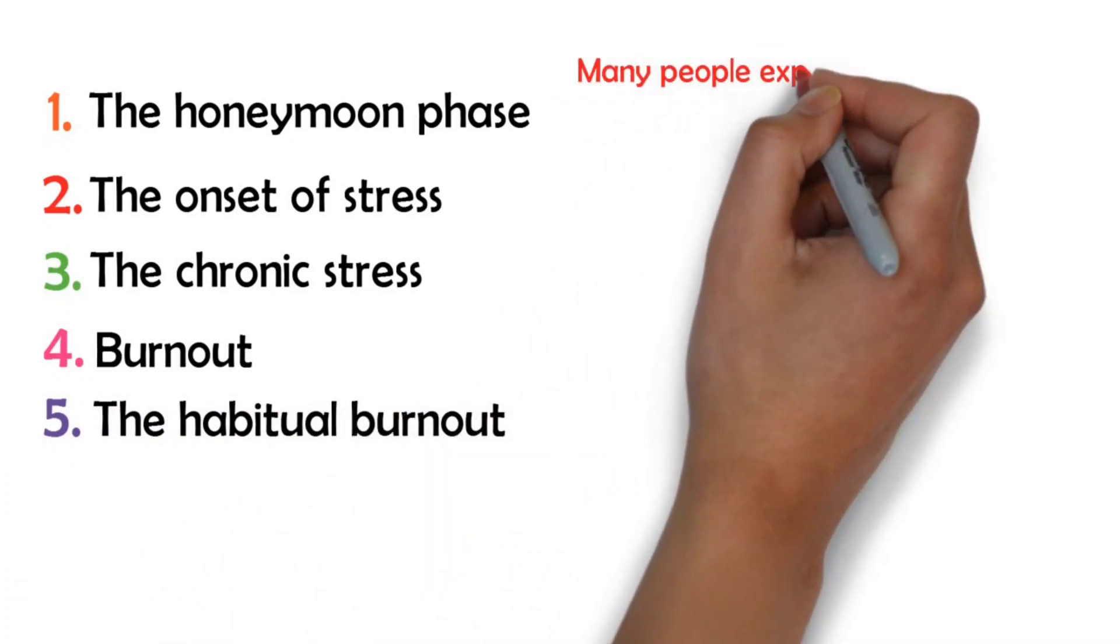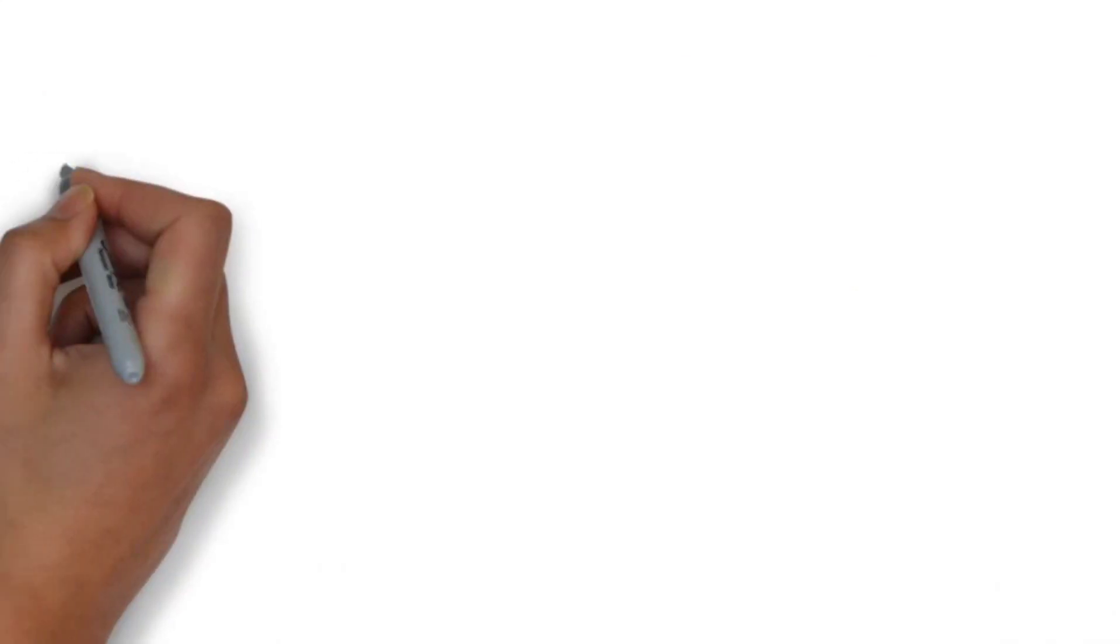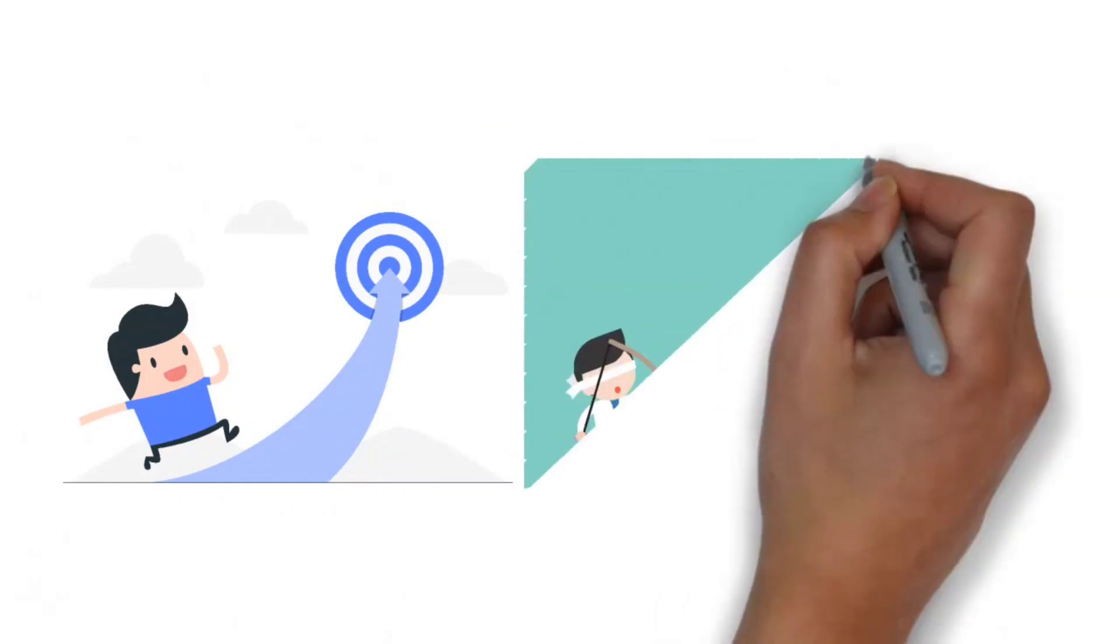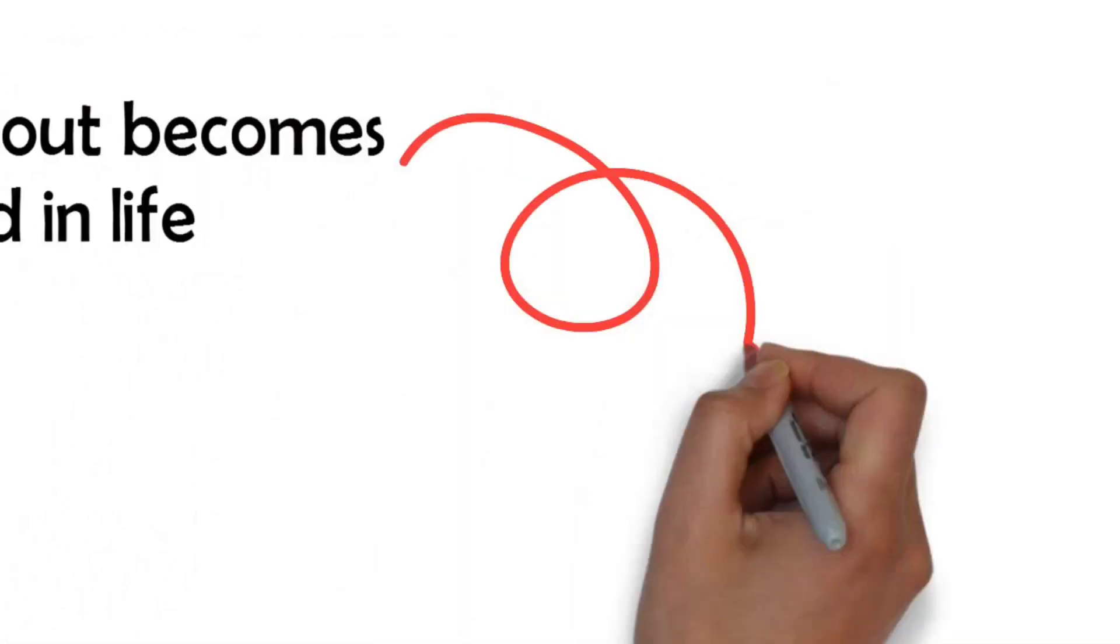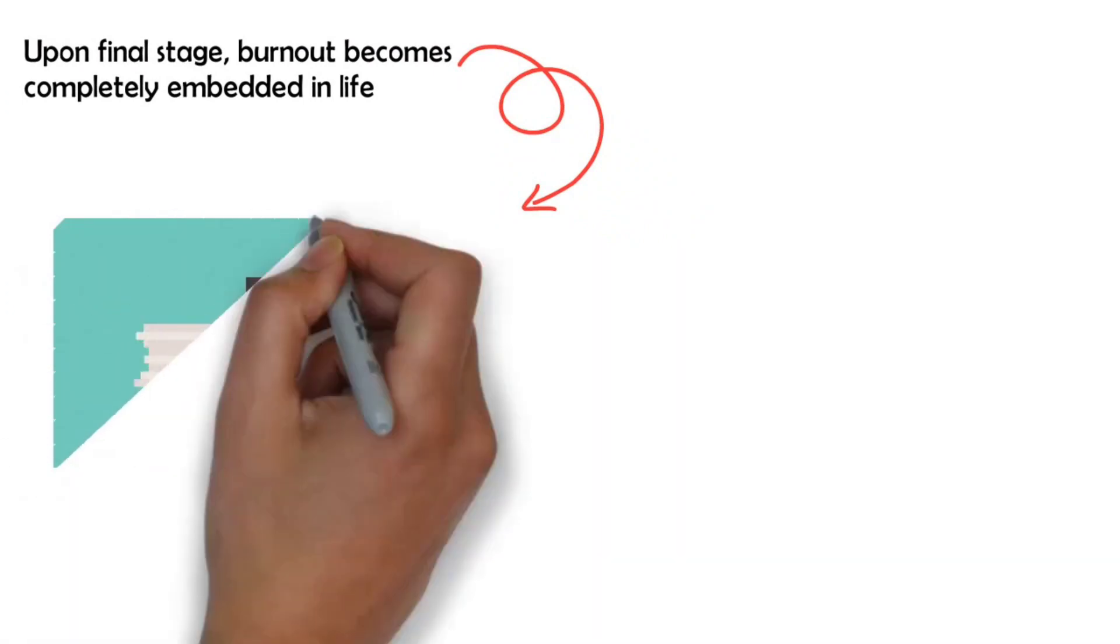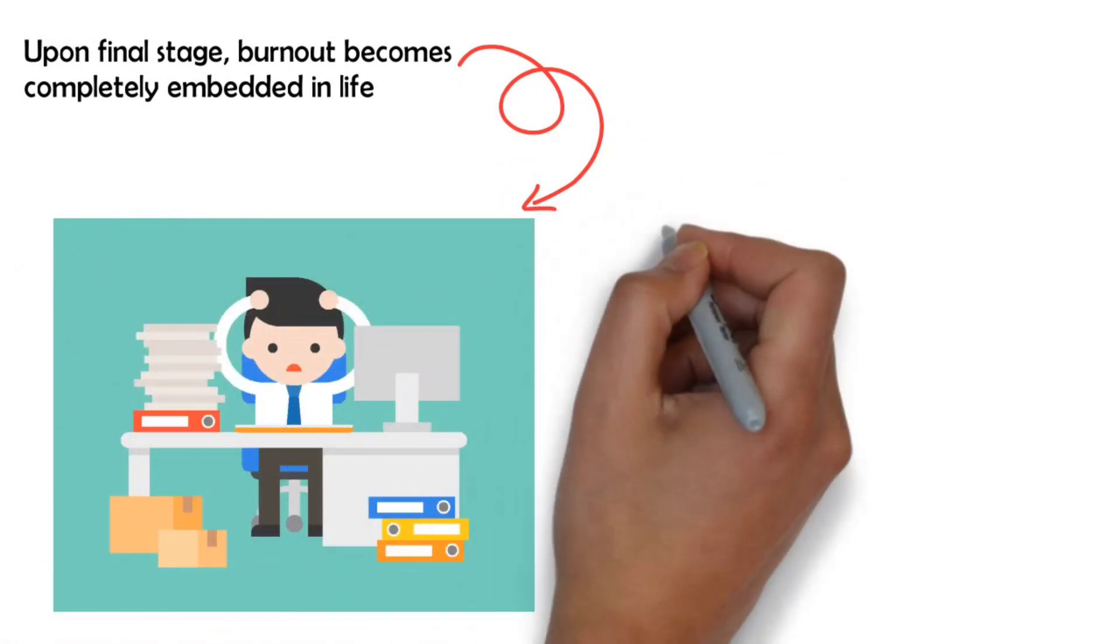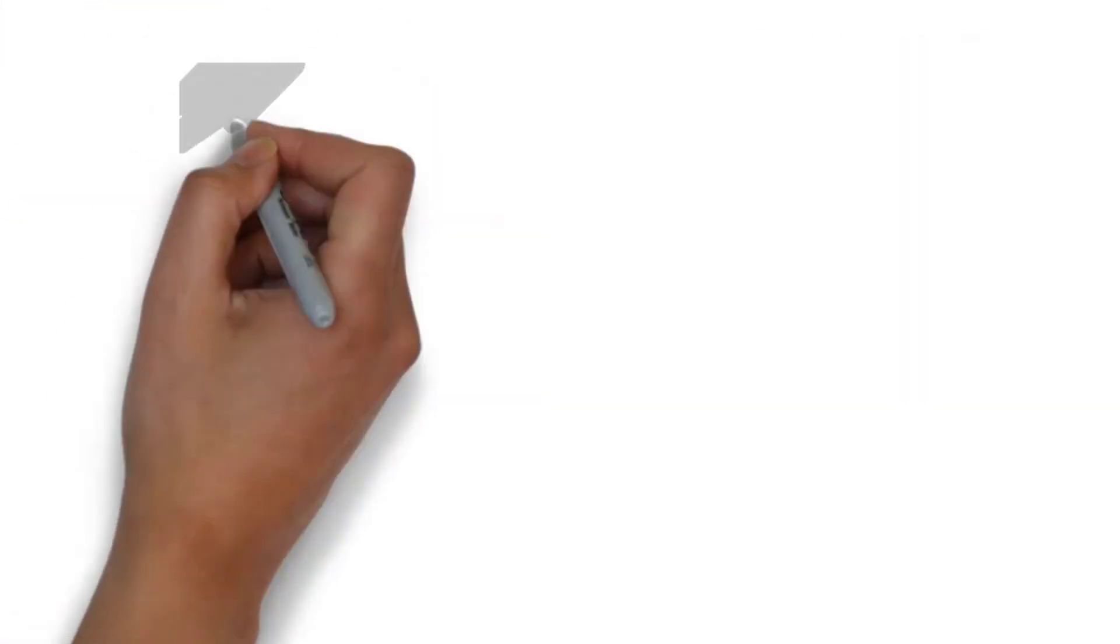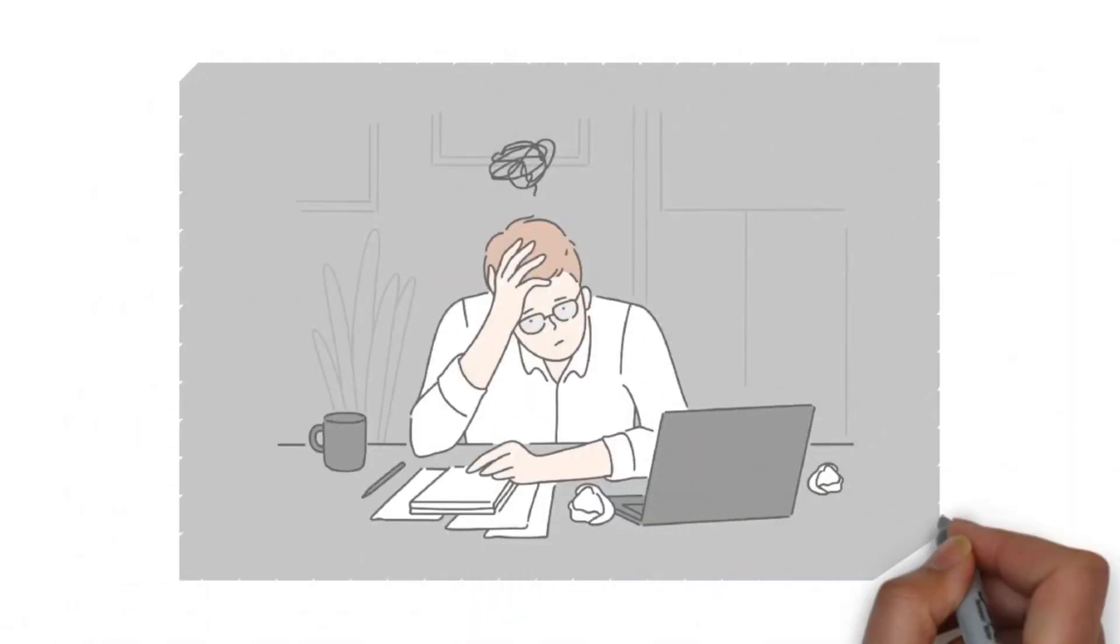Many people begin to experience symptoms as early as the second phase, when there is still a moderate amount of stress, but optimism, interest, motivation, and performance may already start declining. And by the time you reach the fifth and final stage, burnout has already become so embedded in your life that the experience of mental and physical fatigue becomes more persistent and harder to treat. And you also become more vulnerable to developing depression and anxiety.